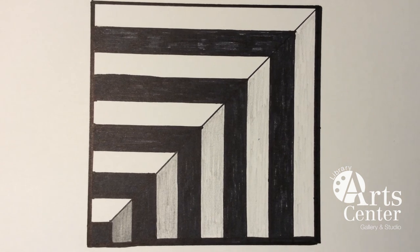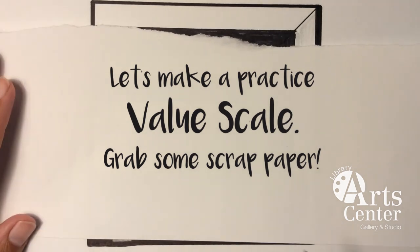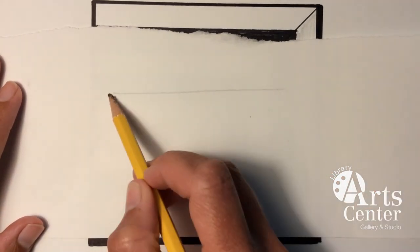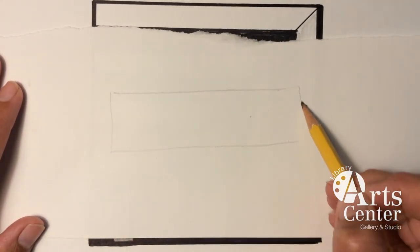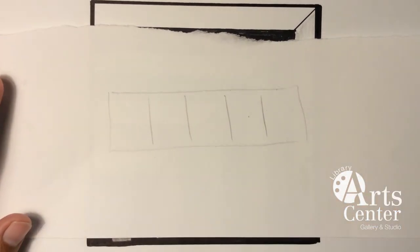So I want you to just do a quick little value scale. So grab a piece of scrap paper and draw a little rectangle here and divide that rectangle into a few different squares.